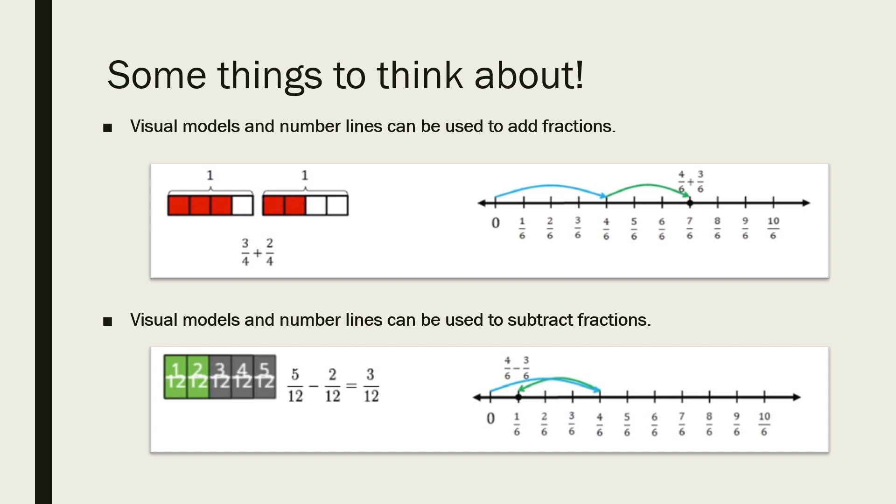When using a number line for subtracting fractions, it looks a little different because instead of adding on, we're counting back. So four sixths is where we start, and then we can count back three sixths. We move right to show where we start on our number line, and then we move to the left to show where we end up after subtracting.